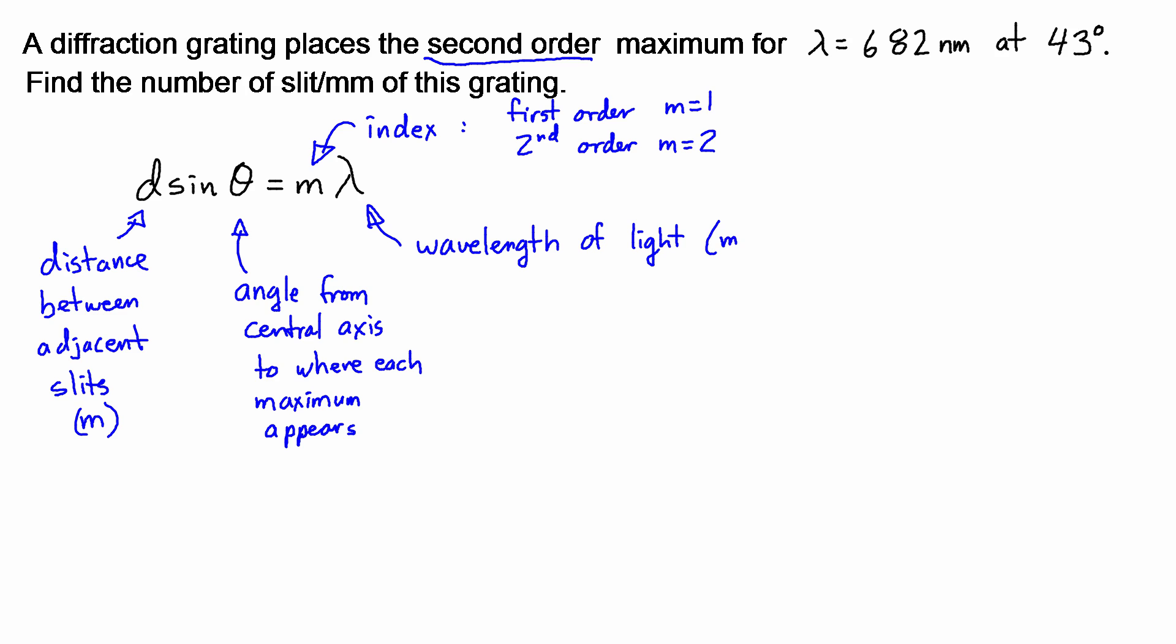So the wavelength of light I would also say is meters. The index has no units and the angle would be degrees or radians depending on what you're using with your calculator. Because you're running that through the sine function so you're basically just going to get a ratio out of that.